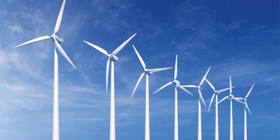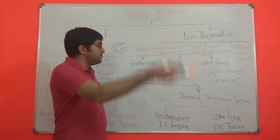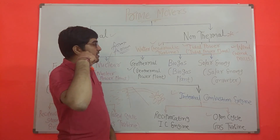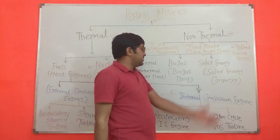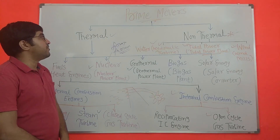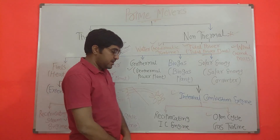Another classification of non-thermal prime movers is windmills. Wind is also a free and naturally available source of energy. Using the high velocity of wind, windmills are rotated to produce electricity. This is a short introduction about the different forms of energy and prime movers.